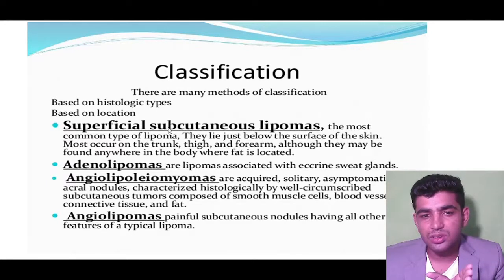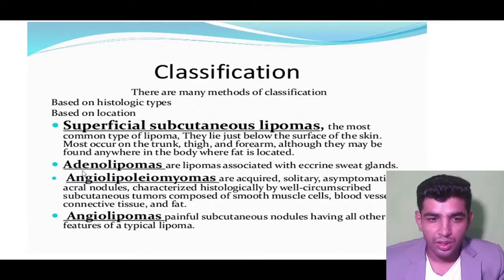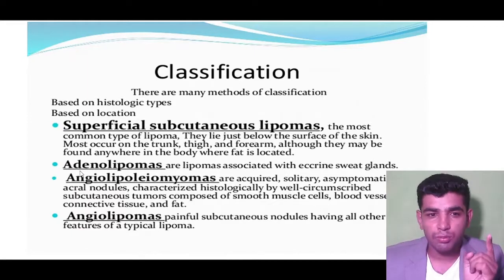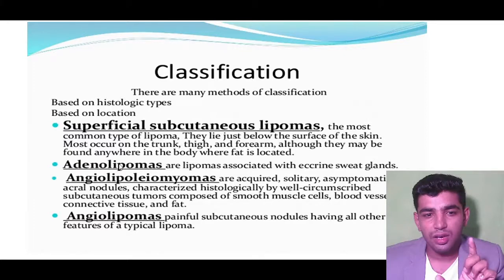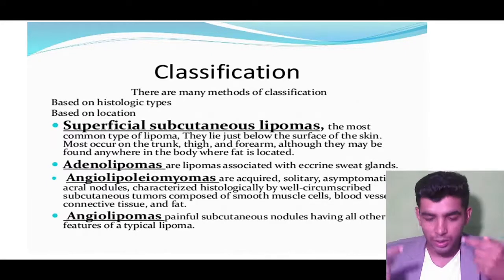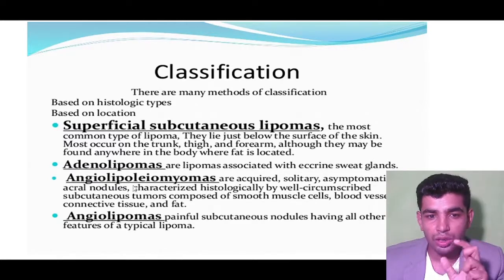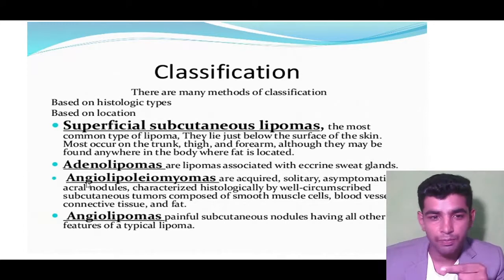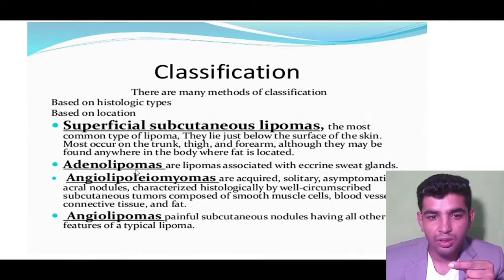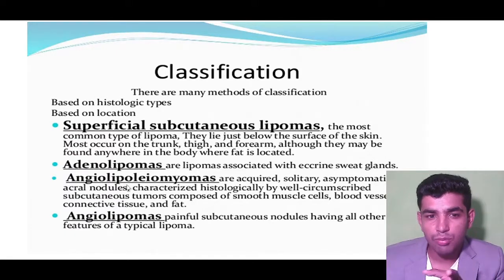On the basis of histological type, lipomas are classified as: superficial subcutaneous lipoma — located in the subcutaneous layer beneath the skin; adenolipoma — involving the sweat glands (adeno = gland); and angiolipomyoma — involving blood vessels, smooth muscle, and fat accumulation (angio = blood vessels, lipo = lipid, myoma = smooth muscle).